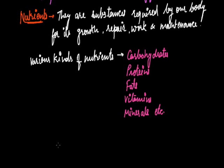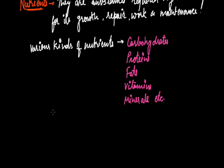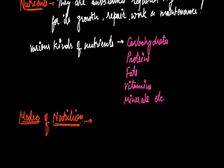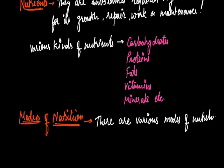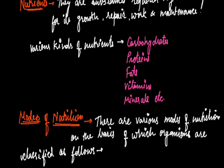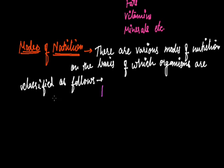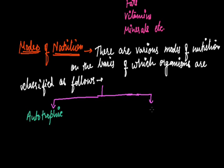Besides providing energy, nutrients also help in protection of our body from pathogens and disease-causing agents. After discussing nutrition and nutrients, we will take the next topic, that is modes of nutrition. There are several modes of nutrition, on the basis of which organisms are classified. They are autotrophic and heterotrophic — so mode of nutrition is of two types: first is autotrophic, and second is heterotrophic.